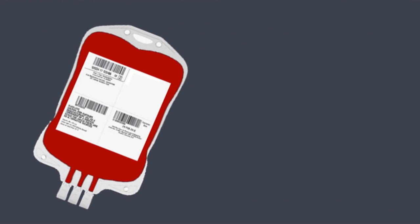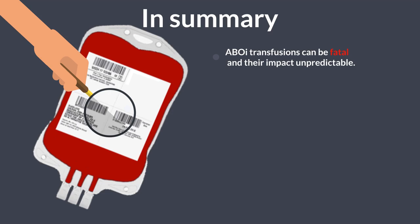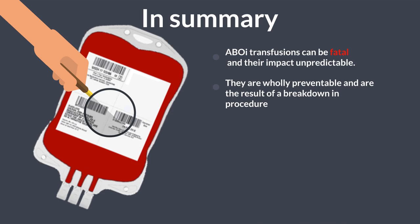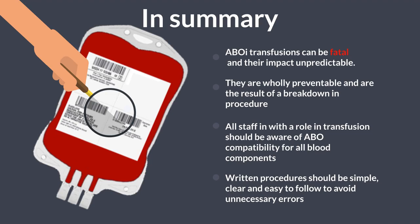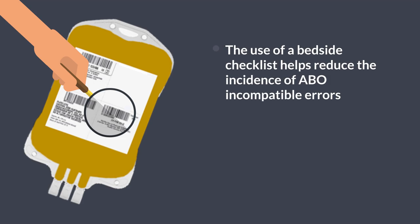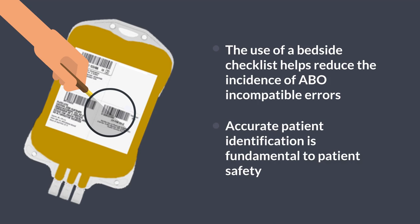In summary, ABOI transfusions can be fatal and their impact is unpredictable, therefore it is vital they are avoided. They are wholly preventable and are the result of a breakdown in procedure. All staff with a role in transfusion should be aware of ABO compatibility for all blood components. Written procedures should be simple, clear, and easy to follow to avoid unnecessary errors. The use of a bedside checklist helps reduce the incidence of ABO incompatible errors, and accurate patient identification is fundamental to patient safety.